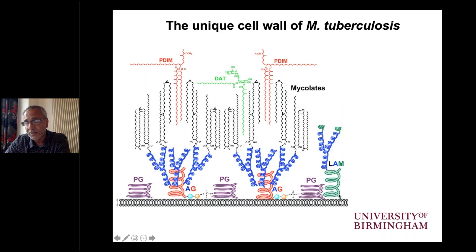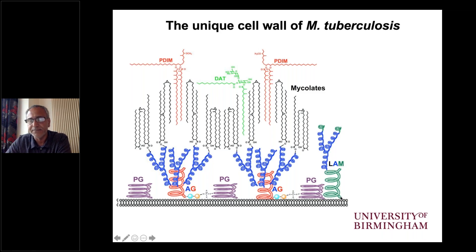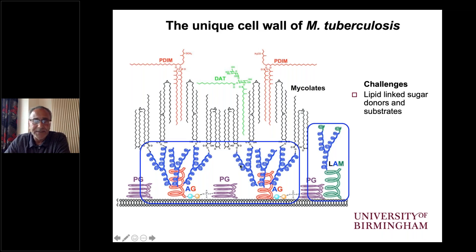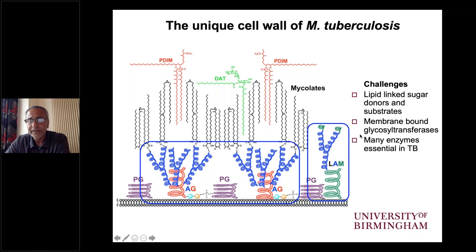Also intercalated is a characteristic lipopolysaccharide called lipoarabinomannan. It has the same arabinan segment found in arabinogalactan, with unusual capping motifs — either inositol or mannose — and a branched mannan domain with a linear alpha-1,6 backbone punctuated by two-linked branches of mannose, anchored in the membrane through a phosphatidylinositol anchor. A unifying theme throughout will be the use of a polyprenoid phosphate as a lipid carrier for the synthesis of these complex polysaccharides.